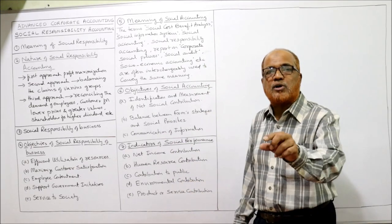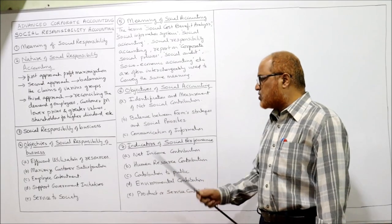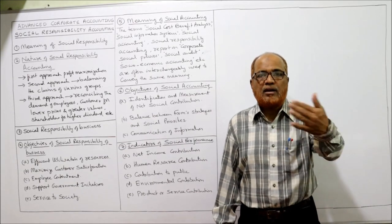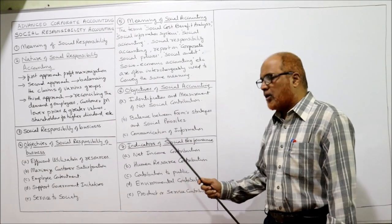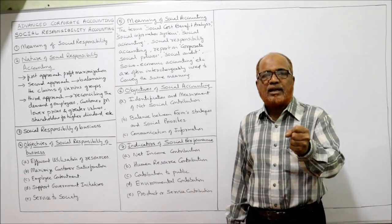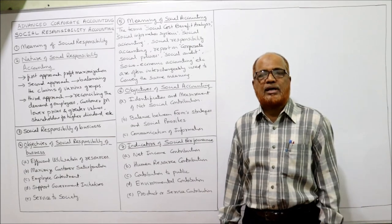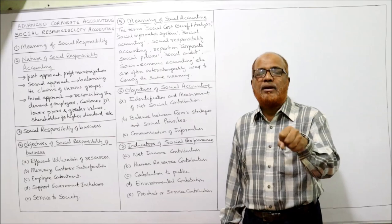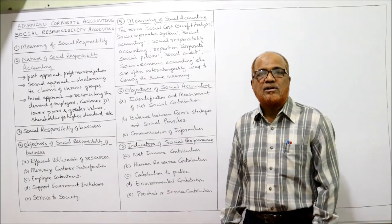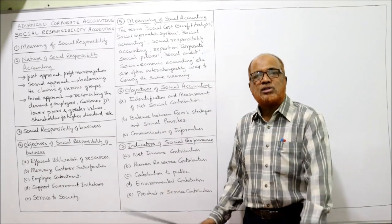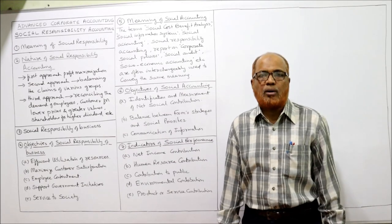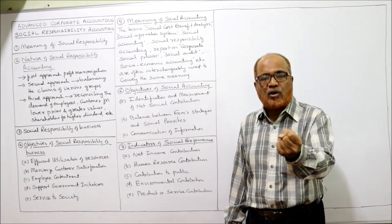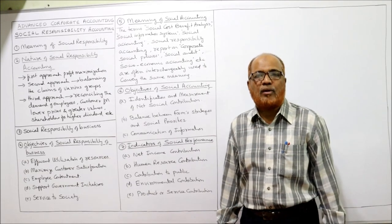Now the last topic: indicators of social performance — how we can know that a company is performing its social responsibility. The first indicator is net income contribution. Only a financially strong company can help society and perform social goals. A company that is not financially strong cannot help others. If a company wants to perform social obligations, it must earn sufficient income — only if the income is high can it perform social activities.